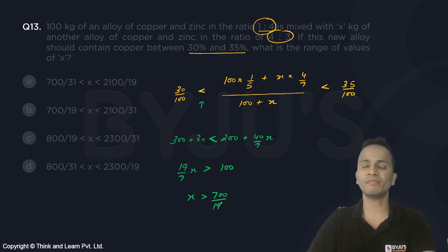Now stop here and check the options. The first option does not match, the third option does not match, the fourth option does not match. Okay, so there is no need to calculate the other side of the range.